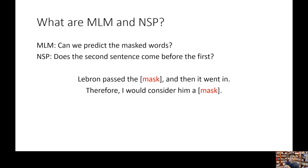In Masked Language Model, a certain percentage of words in the sentence are masked — it's actually a hyperparameter that can be selected. For example, 'LeBron passed the…' and then it masks that word. And in a second sentence, 'therefore I would consider him a…' and it masks that word — it could be a great player, an all-star, or a goat. Masked Language Model hides certain words so that BERT has to make a prediction on them.